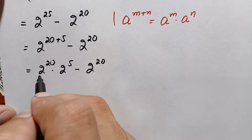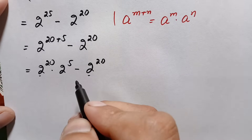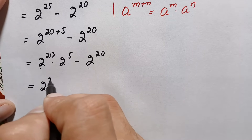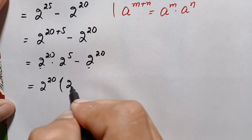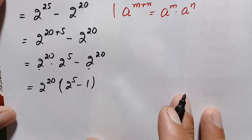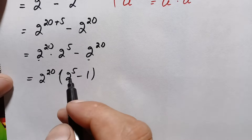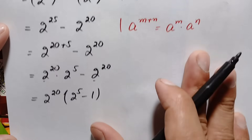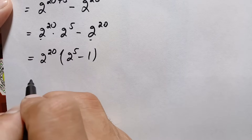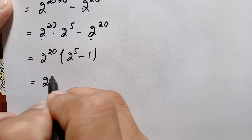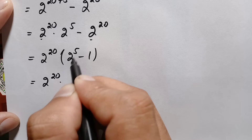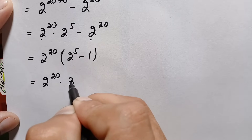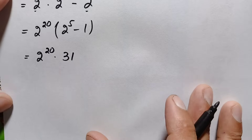The factor 2 raised to power 20 is common in both terms, so taking it out common gives 2 raised to power 20 times (2 raised to power 5 minus 1). Replacing 2 raised to power 5 with its value 32, we get 32 minus 1, which is 31. So the expression simplifies to 2 raised to power 20 times 31.